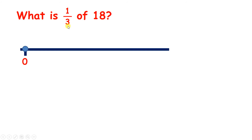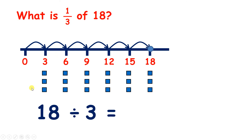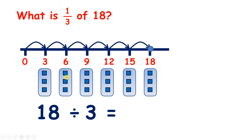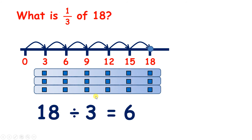So again, we can count up in steps of 3. 3, 6, 9, 12, 15, 18. So we have 18 divided by 3, which is the same as finding a third of 18. We have 6 groups of 3. So 18 divided by 3 is 6. Or, if we divide 18 into 3 groups, we can have 6 in each group.